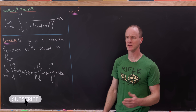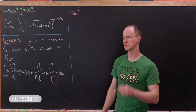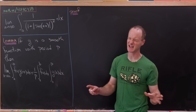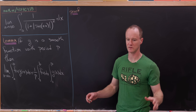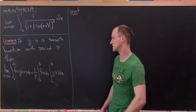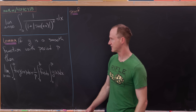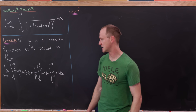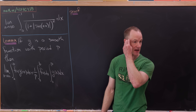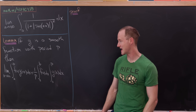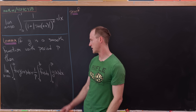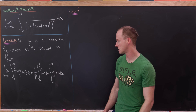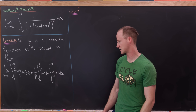What we'll use here is a result which is sometimes called the Riemann-Lebesgue lemma, though this is actually a simplified version where we're only looking at really nice functions. If g of x is a smooth function with a period of p, then the limit as n goes to infinity of the integral from a to b of f of x times g evaluated at nx equals 1 over p times the integral from a to b of f of x times the integral from 0 to p of g of x.